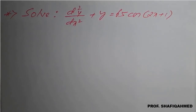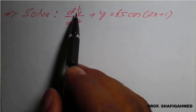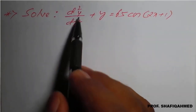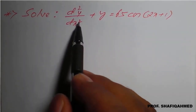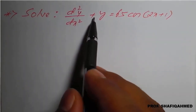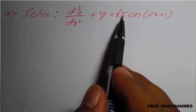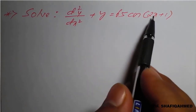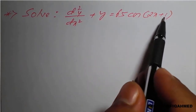Hello everyone. In this lecture, we will see a problem on non-homogeneous differential equation using Type 2. The problem is: d²y/dx² + y = 65·cos(2x + 1).